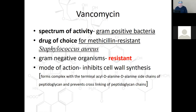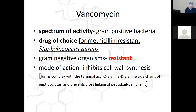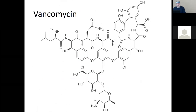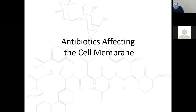Vancomycin forms a complex with the terminal acetyl-D-alanine-D-alanine side chain of the peptidoglycan and prevents cross-linking — that's stage three of cell wall synthesis. So vancomycin, like penicillin, is messing with the cell wall. That covers our cell wall antibiotics. We're at slide 28 of about 70, so we're about halfway through the material.